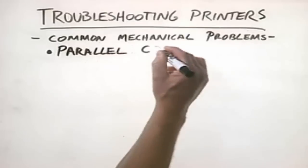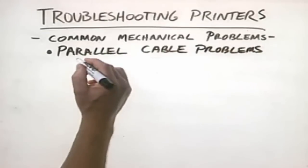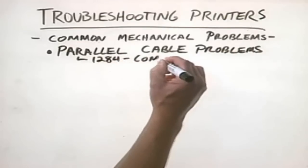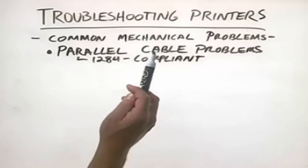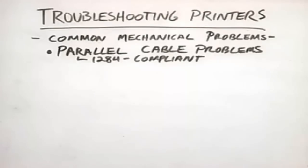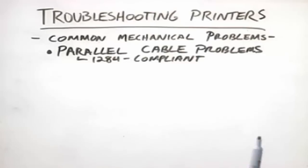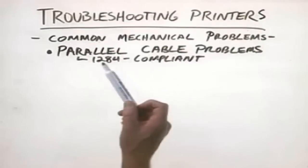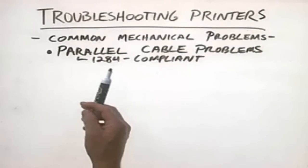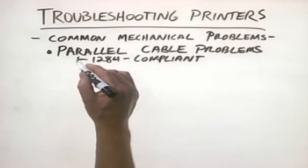Something you can fix yourself are parallel cable problems, if you're dealing with a parallel printer. With most modern printers, you need to make sure that you're using a 1284 compliant cable. Older parallel cables and printers tended to be very proprietary, meaning parallel cables from one vendor might not work with a printer from another. So if you're having problems getting a print job to a parallel printer, one problem could be a non-compliant 1284 cable. If you're dealing with a non-compliant cable, replace it — they cost about $15. Go buy a compliant cable, plug it in, and see if that fixes your problems.